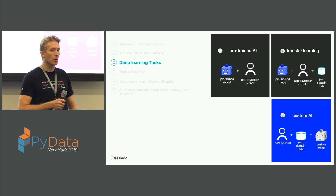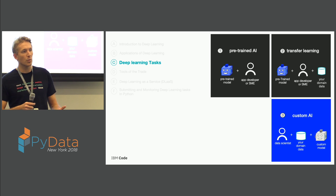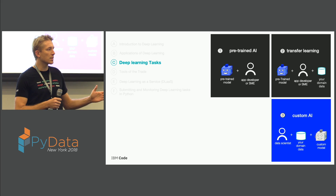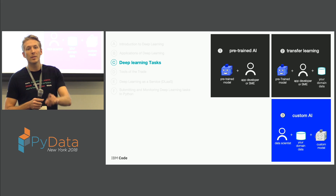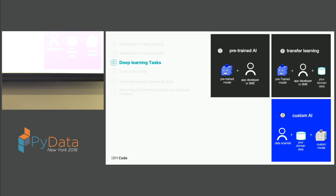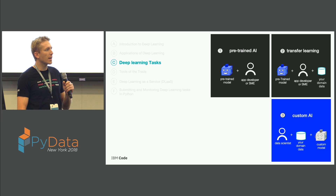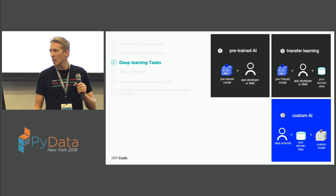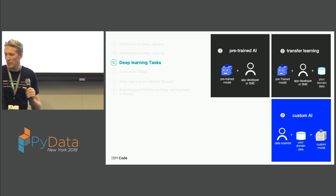With the custom route, you design your entire deep learning neural network yourself. You create or find the data to train the neural network and train it from scratch, building those subsequent layers of increasingly complex representations. These are the three main deep learning tasks: using pre-trained AI, using transfer learning, or building a new neural network from scratch.